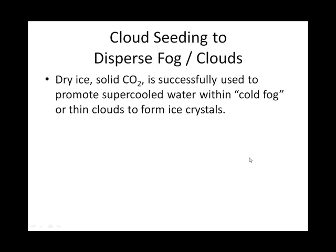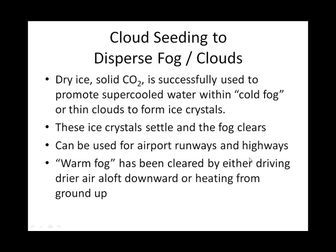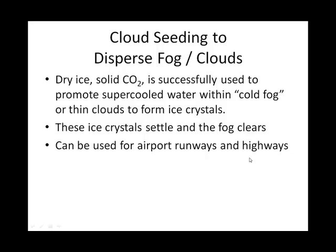On the ground, we can do a similar sort of cloud seeding to make fog clear. Fog is basically a cloud at ground level. We can promote condensation if we incorporate some sort of cloud condensation nuclei — dry ice, solid CO2 — which actually does a good job for that.